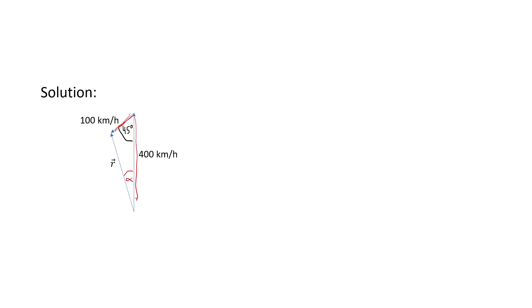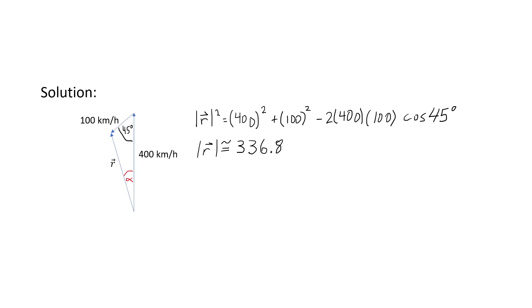We'd like to know what the resultant vector is, and we'll begin by determining its magnitude. It's a pretty straightforward case of side-angle-side. We know one side of the triangle, another side, and the angle in between them. So we're just going to use the cosine law, and when we do that, we get a magnitude of roughly 336.8.